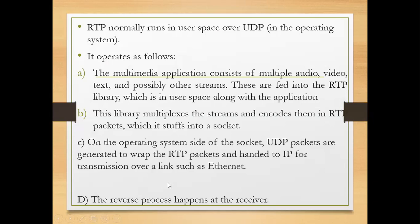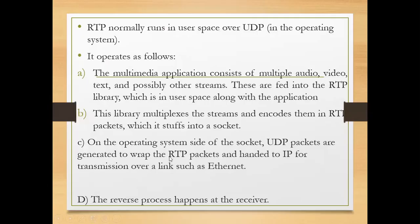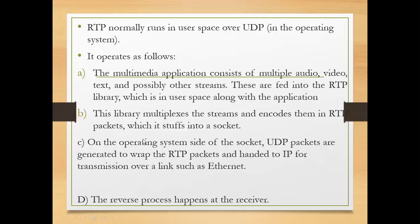Next step: on the operating system side of the socket, UDP packets are generated to wrap the RTP packets, and handed to IP for transmission over a link such as Ethernet.